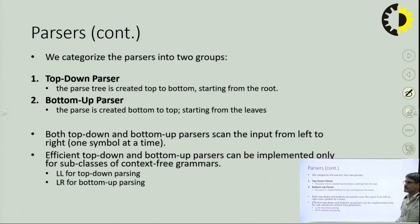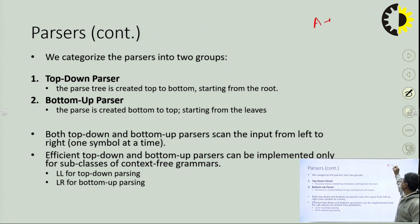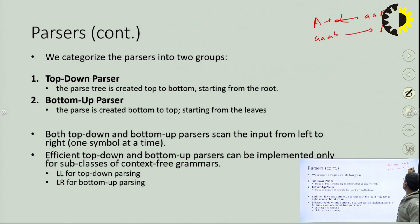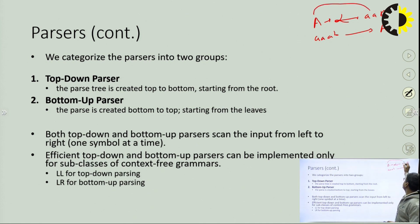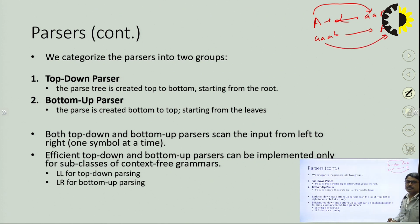Parsers are in two categories. There are two philosophies: you start from a string and go to a particular start symbol, or you start from a start symbol and go to a particular sentence. So there will be two modes. You start with the start symbol and derive the sentence, or you start with the string and generate the start symbol. According to that, there are two types of parsers.